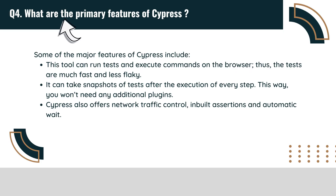What are the primary features of Cypress? Some of the major features of Cypress include: this tool can run tests and execute commands on the browser, thus the tests are much faster and less flaky. It can take snapshots of tests after the execution of every step, so you won't need any additional plugins. Cypress also offers network traffic control, inbuilt assertions, and automatic wait.